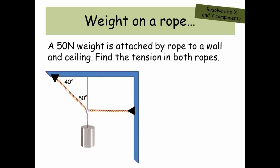Weight on a rope. A 50 newton weight is attached by a rope to a wall and ceiling. Find the tension in both ropes. So to solve this problem, we're going to resolve our components in the y and x directions. So we've got a force or a tension T1 on our rope that's going against the wall. And we're going to have another force called T2, a second tension in the second rope that's going up to the ceiling.